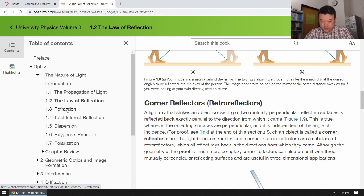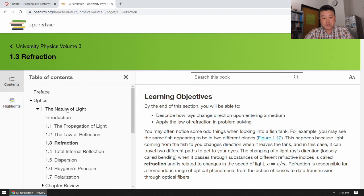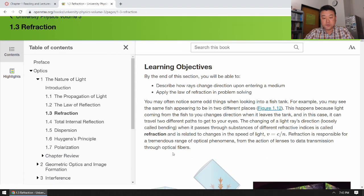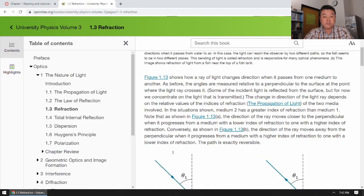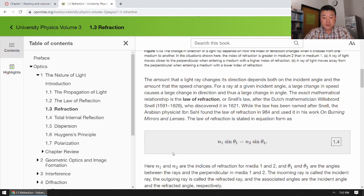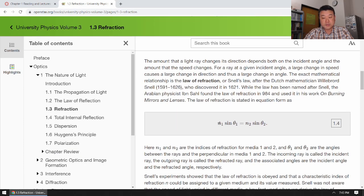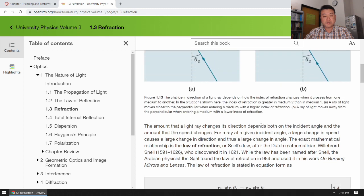In section 1.3, it covers refraction and law of refraction or what we call Snell's law. It describes the angle at which light rays come in at the boundary of two transparent mediums, angle at which light rays come in and angle at which light rays go out.